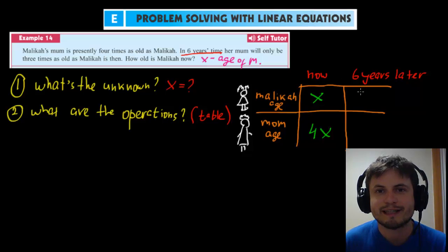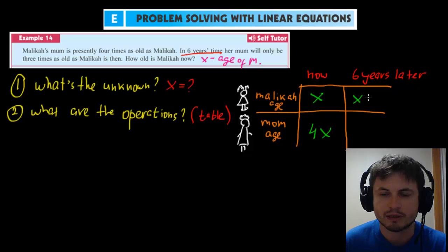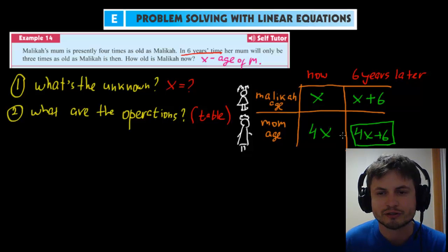Now what is Malika's age in six years? Well of course it's X plus six, and that's her age in six years. And her mom's age in six years is going to be 4X plus six. So this is basically something that we have to try to identify or use some logic here to understand that basically six years later her mom's age is going to be 4X plus six.